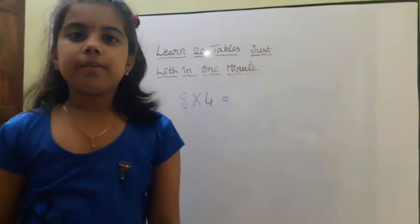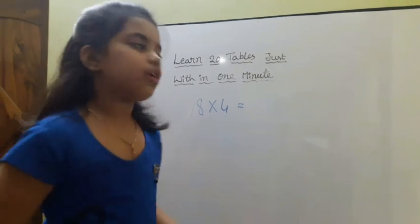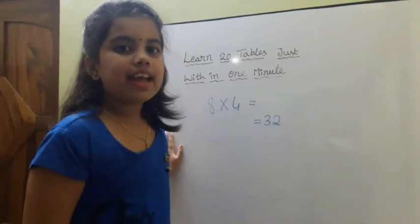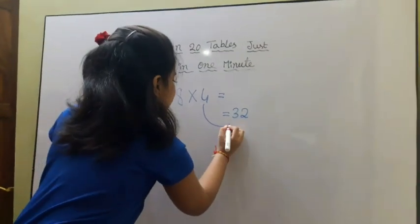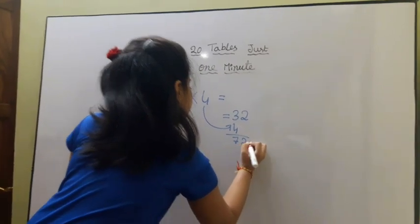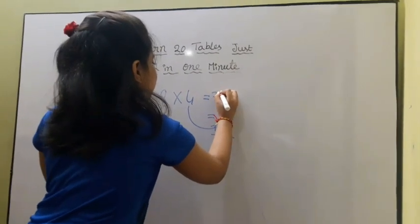First we multiply 8 into 4 is equal to 32. Then we add 4 into 10's place. Now answer is 72.